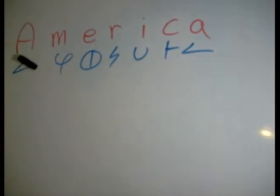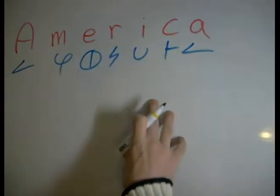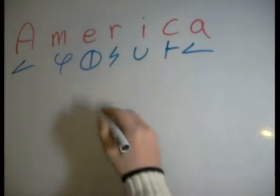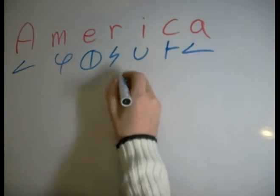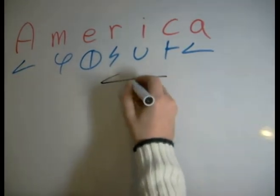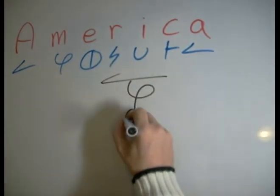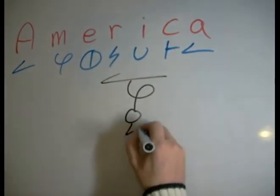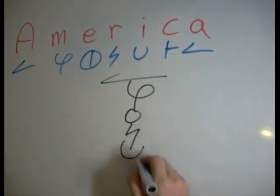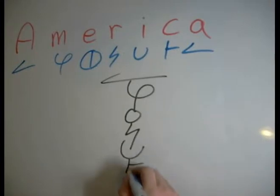Today we're going to do the word America in Descript. Let's have a look here quickly. The simplest possible way to combine these letters would be A, M, E, R, I, C, A.